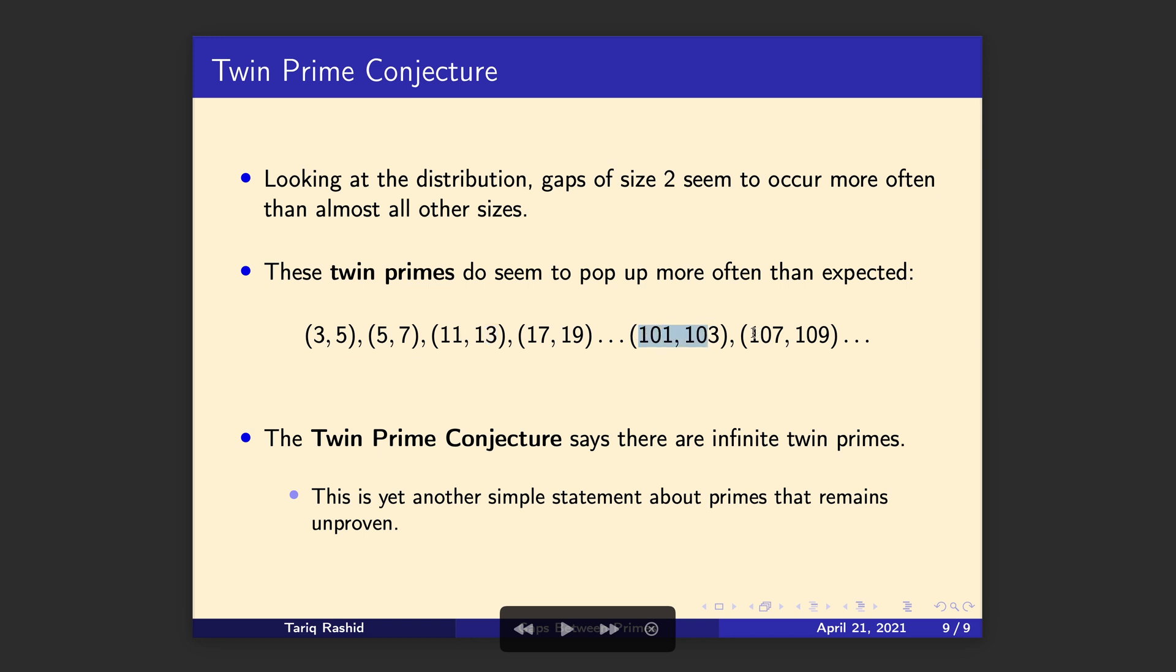So 101, 103, 107, 109. So you can ask the question, do they go on forever? And there is a twin prime conjecture, a very famous conjecture, that says yes, they do go on forever. That there are an infinite number of twin primes.